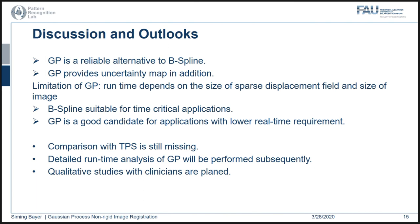However, the limitation of GP-based vector field interpolation is its runtime. In general, GP belongs to the family of nonparametric methods. For the interpolation of each unknown displacement vector, the entire set of training data is taken into account. Hence, the runtime of GP depends on the size of the sparse displacement vectors and the size of the image. In contrast, B-spline interpolation is locally controlled, therefore it is computationally efficient. Consequently, B-spline interpolation is suitable for time-critical applications such as intraoperative brain shift compensation, whereas GP-based interpolation is an excellent candidate for applications with lower real-time requirements, such as treatment planning in radiation therapy.